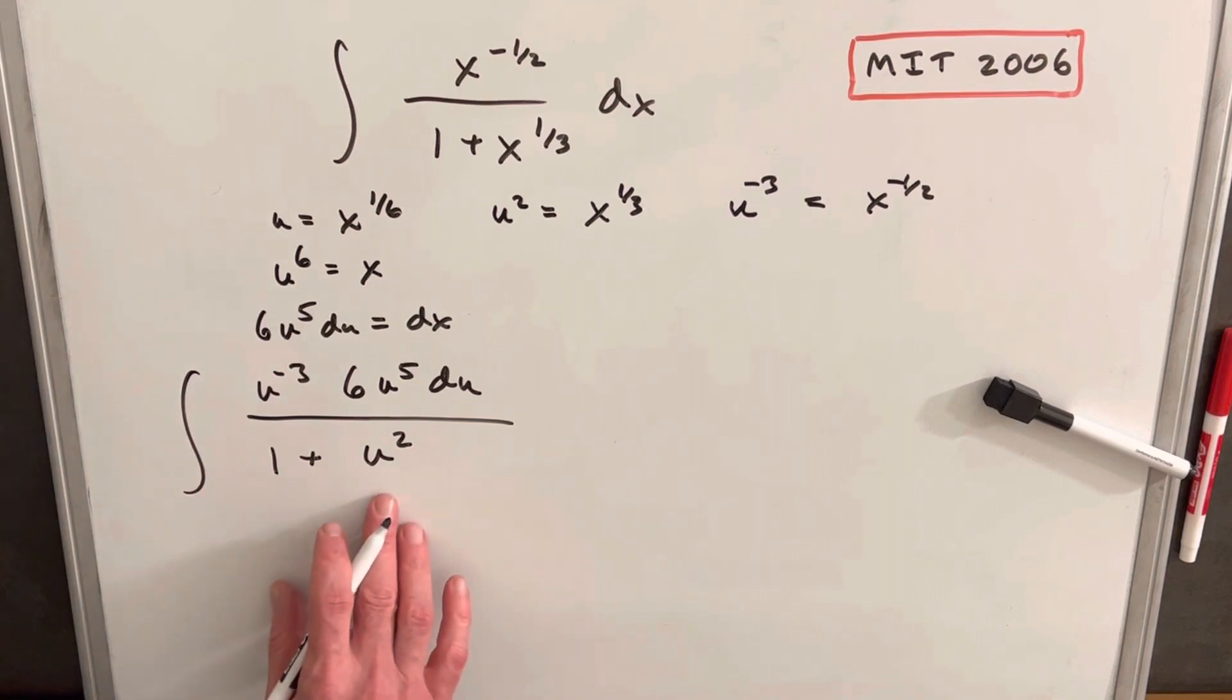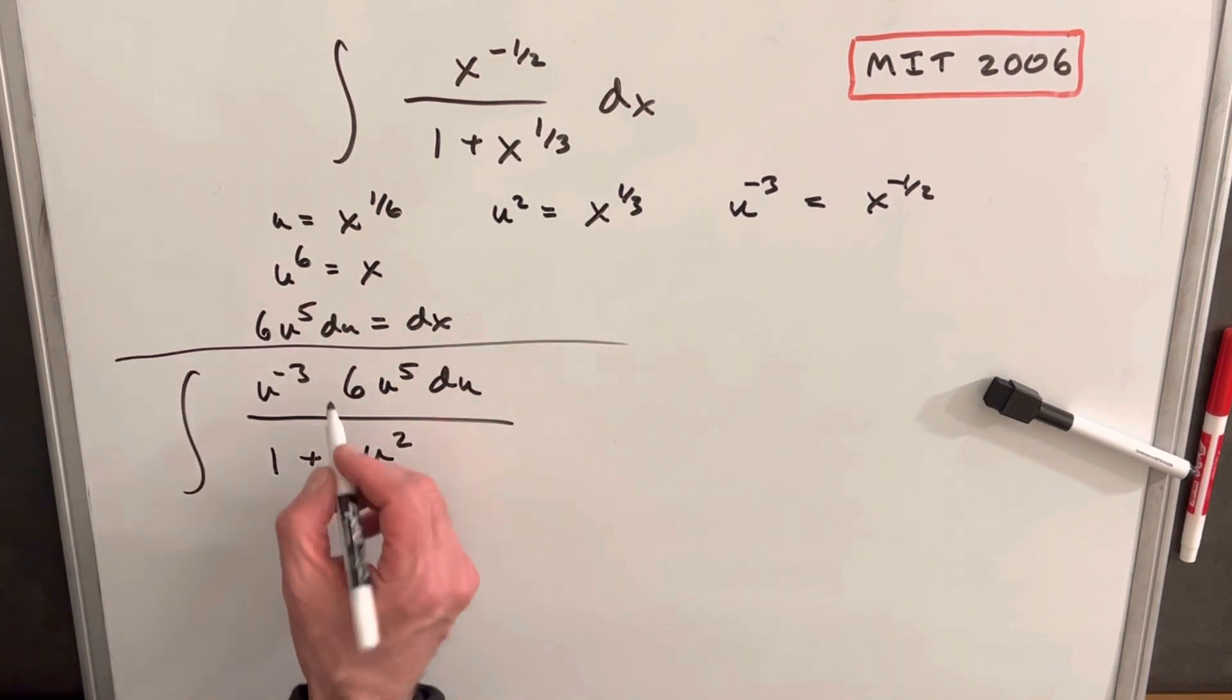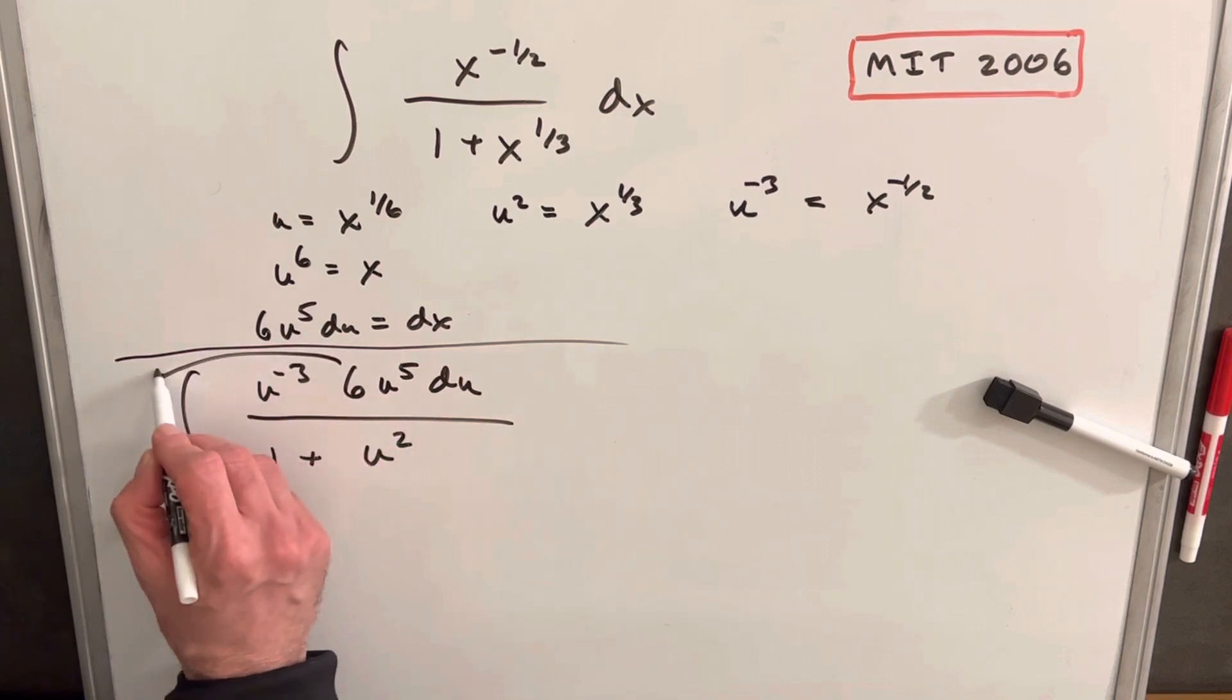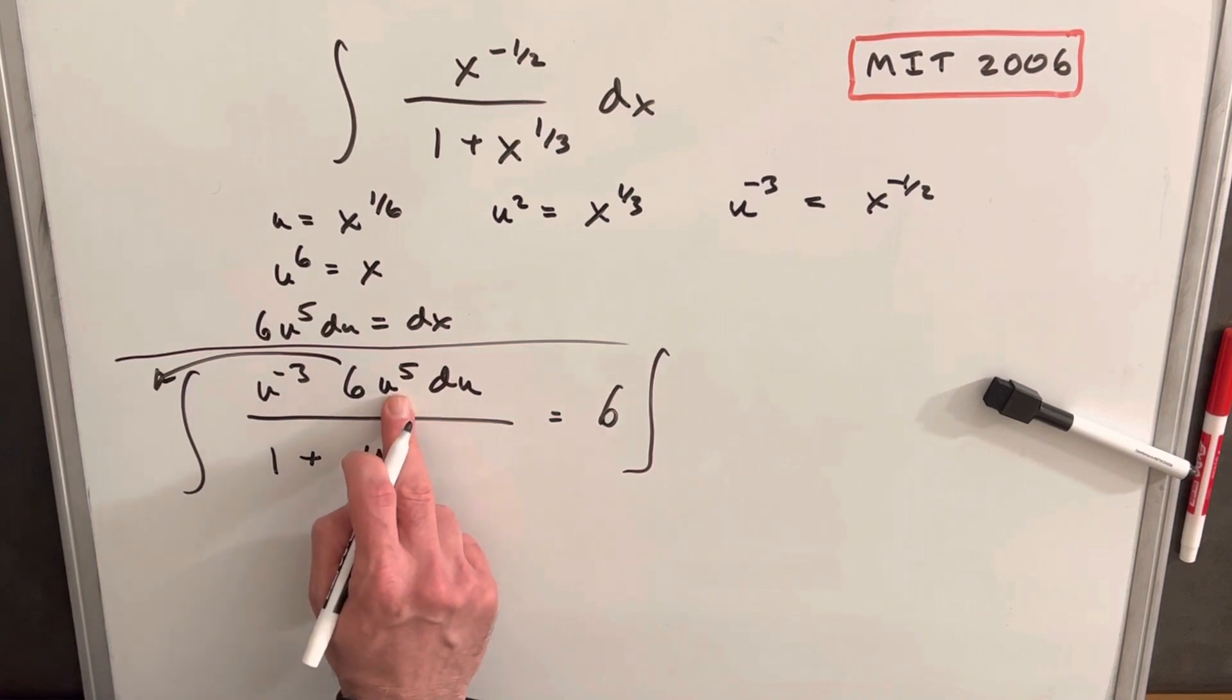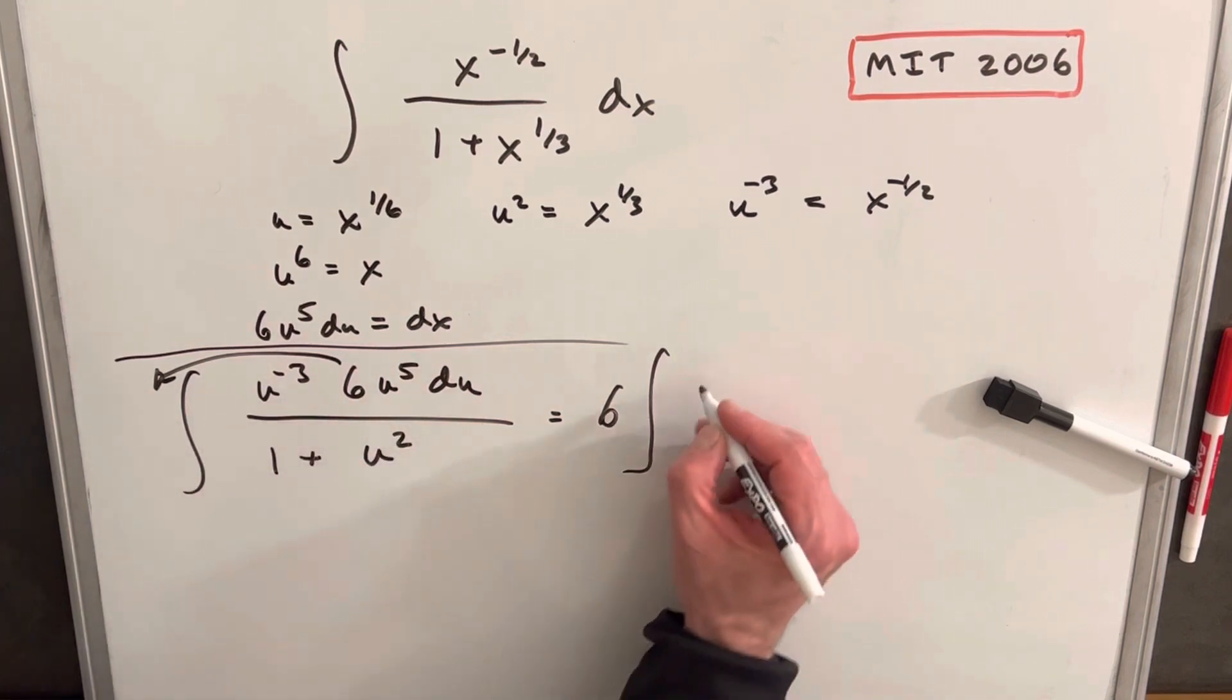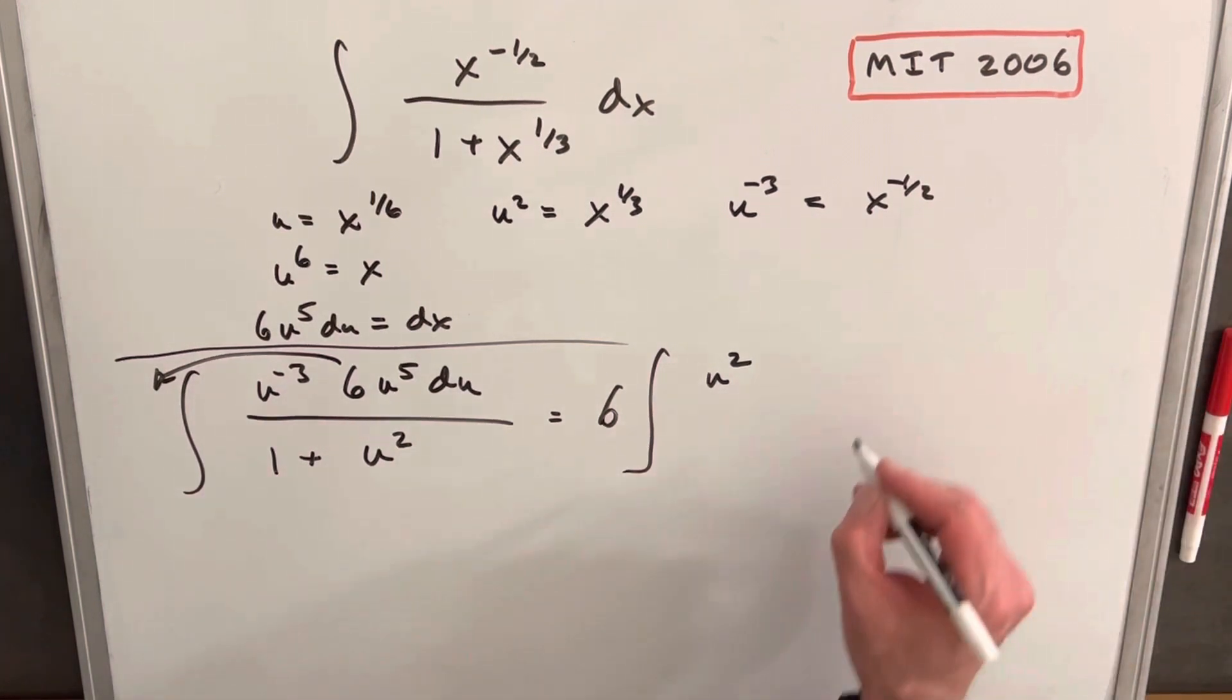Okay, so now you see that I've made all those substitutions based on everything we found up top, and then let's just do a couple things to clean it up. I'll bring my 6 up front, so we're going to have 6 integral, and then let's multiply our u to the fifth times u to the minus third, and we're just going to have a u squared in the numerator.